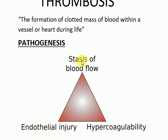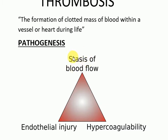There can also be stasis of blood flow. Stasis means stoppage of the flow of any fluid. Normal blood flow is in a laminar fashion — the elements flow centrally in the vessel lumen, separated from the endothelium by a clear zone of plasma. If there is any stasis, stoppage, or turbulence in the blood flow, the normal pattern is disturbed and that leads to the formation of thrombosis.